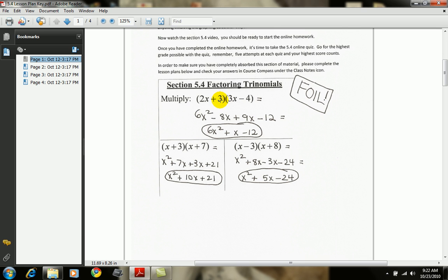And the last two, 3 times negative 4, so the product is negative 12. When you collect like terms, the two middle terms combine to x, so you're left with 6x squared plus x minus 12.